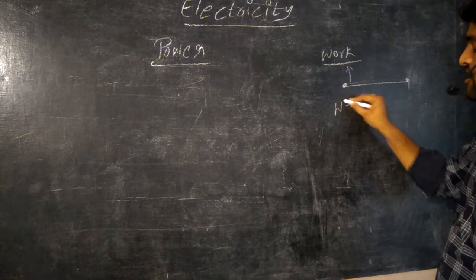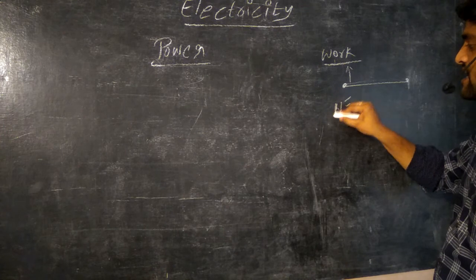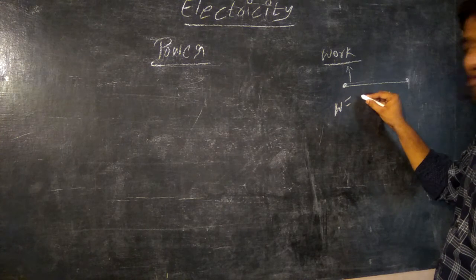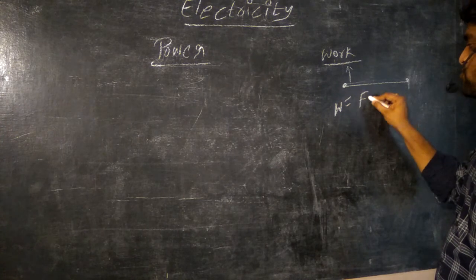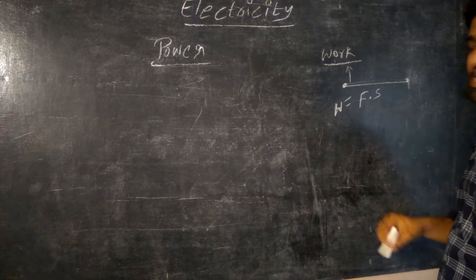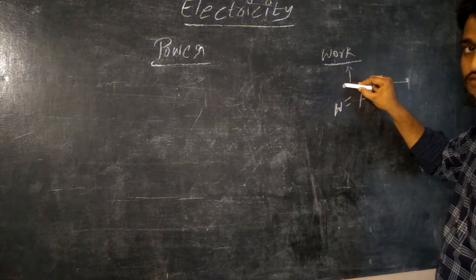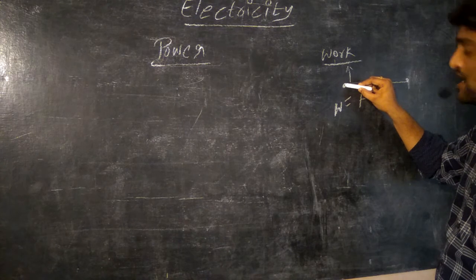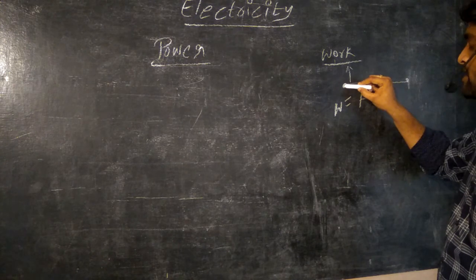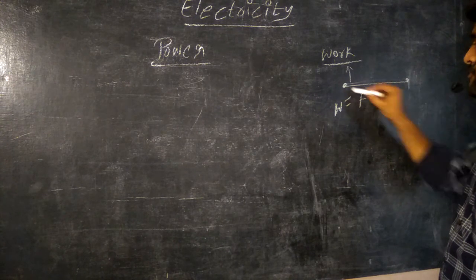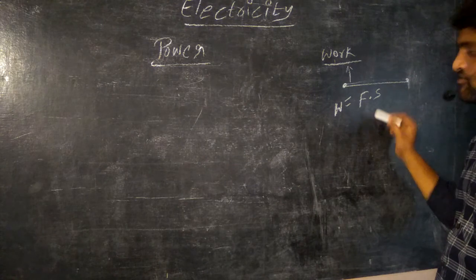So work is represented with the letter W. Work is equal to force into displacement. Why? Because work done is nothing but the application of force on a particular object for moving the object a certain distance from here to here. It is called work.